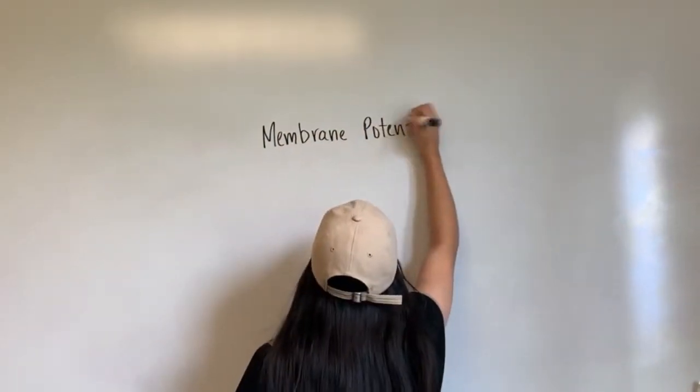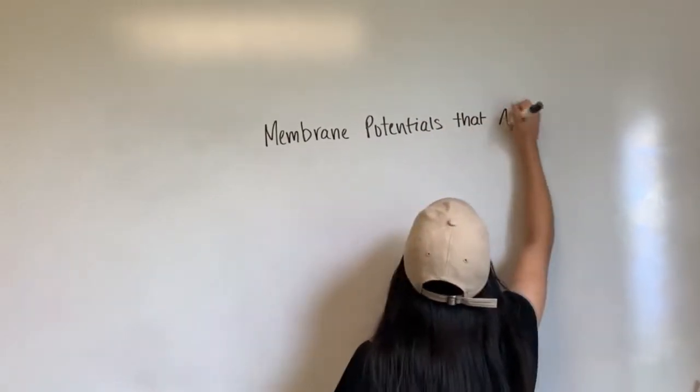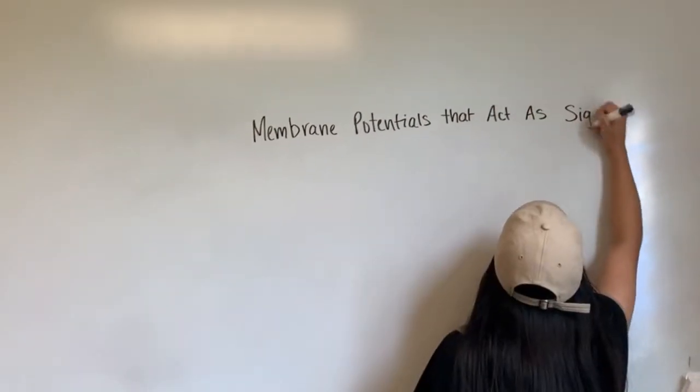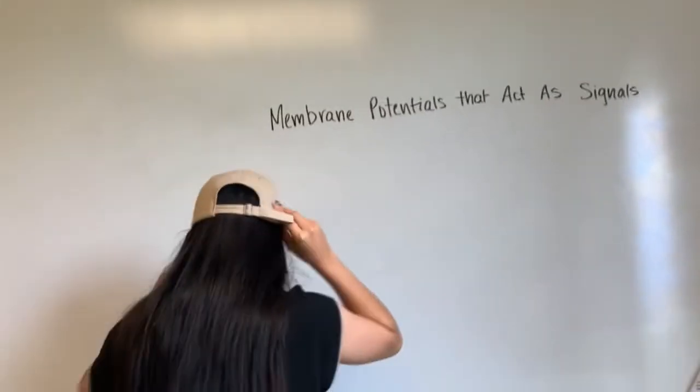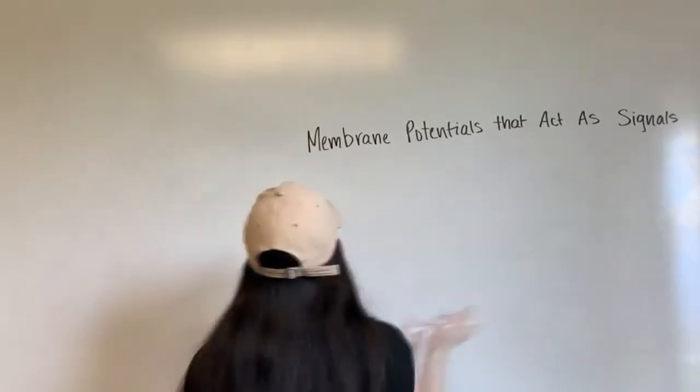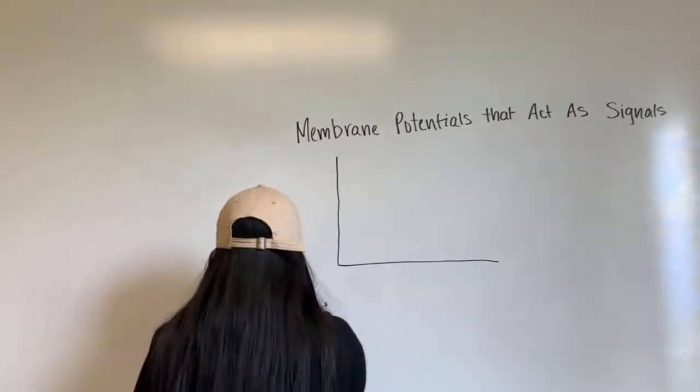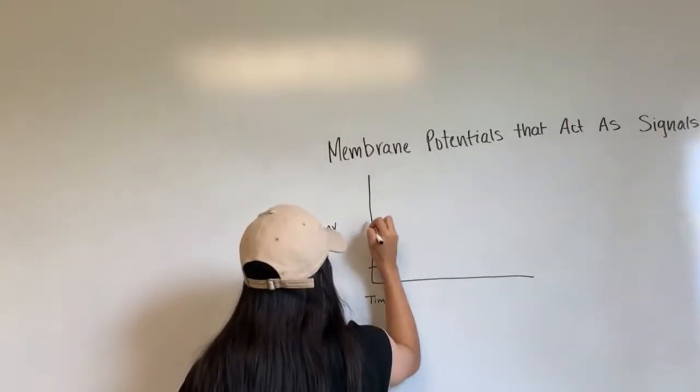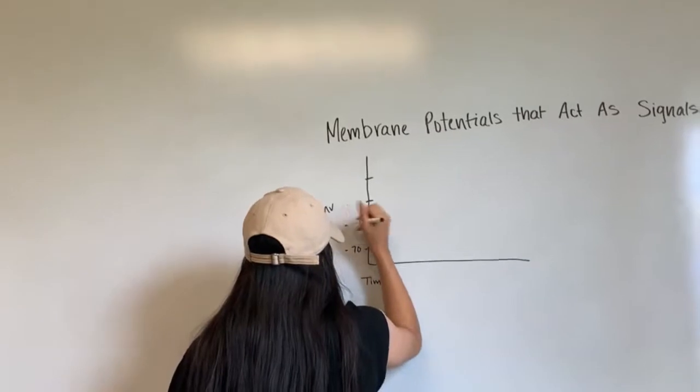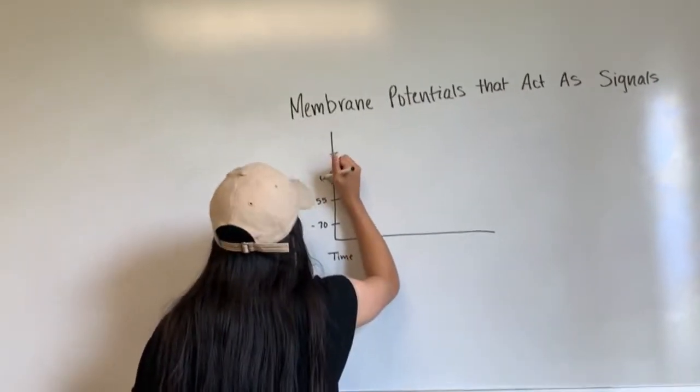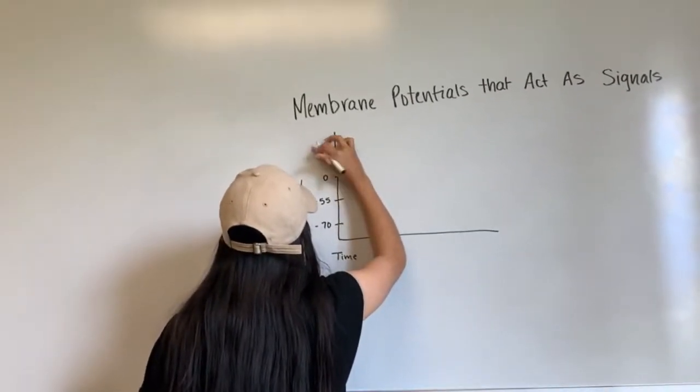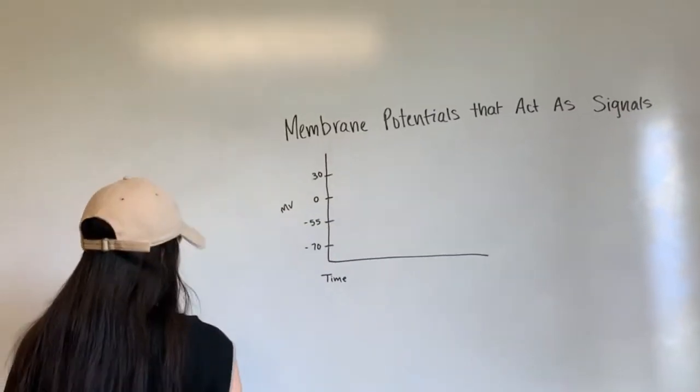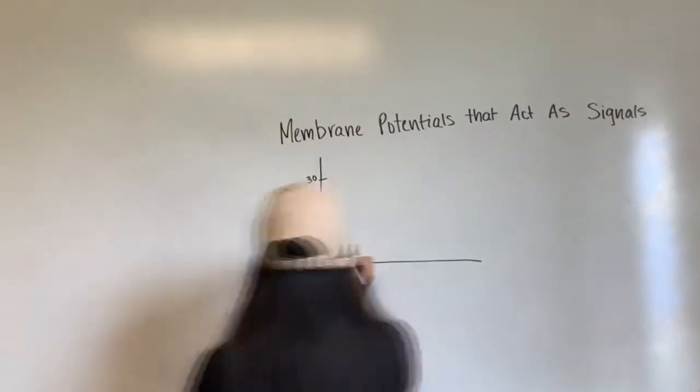Membranes that act as signals. Depolarization is the reduction in membrane potential. Hyperpolarization is the increase in membrane potential and keeps the resting membrane potential negative. Types of signals. There are graded potentials and action potentials. Graded potentials can either be hyperpolarization or depolarization. Dendrites hold graded potentials. They can either be very strong or very weak.